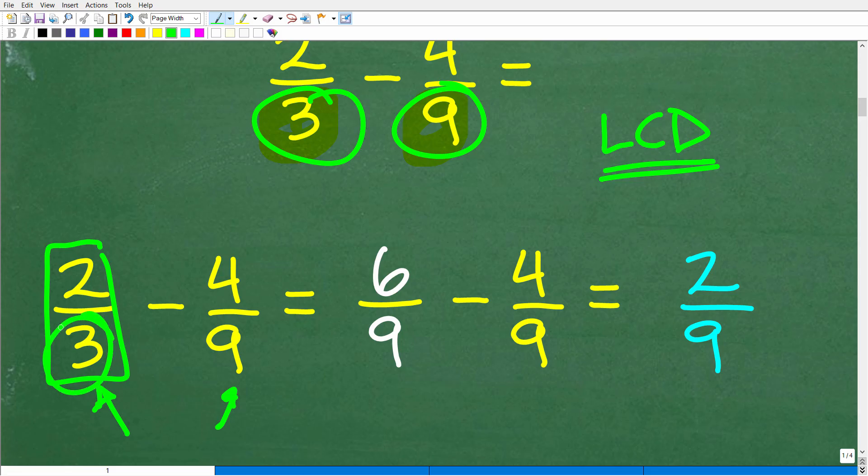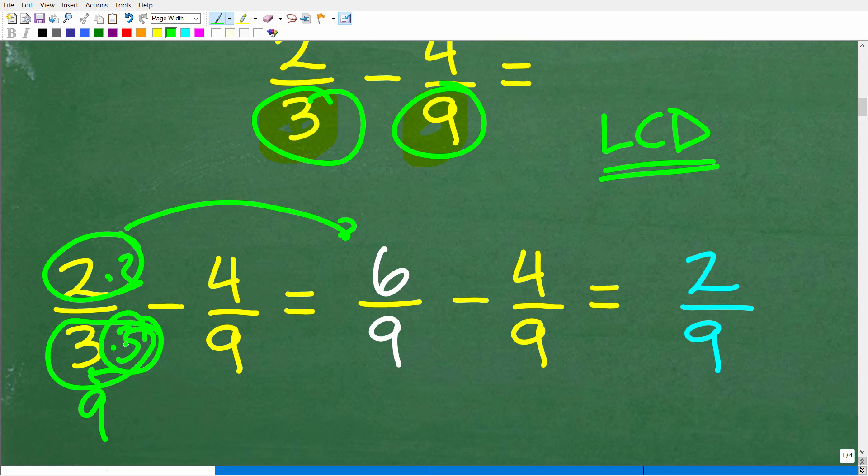So what we need to do here is change this fraction, two over three, such that its denominator is nine. So how can we do that? Well, we need to take this three here and turn it into nine. And that's very easy. All we have to do is multiply that three by a three and we get a nine. But here's the deal. We're going to multiply this denominator by three. Also, I have to multiply the numerator by three as well. So this fraction becomes six. Two times three is six. Over three times three is nine.